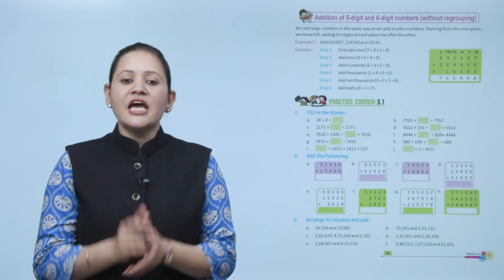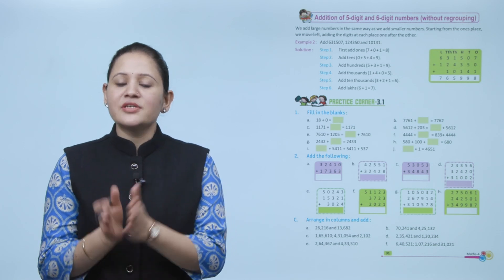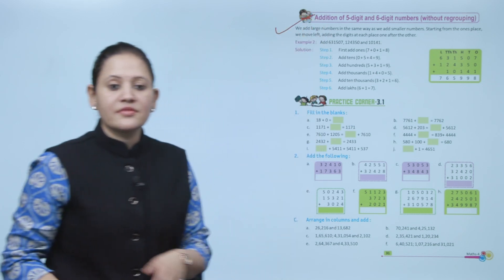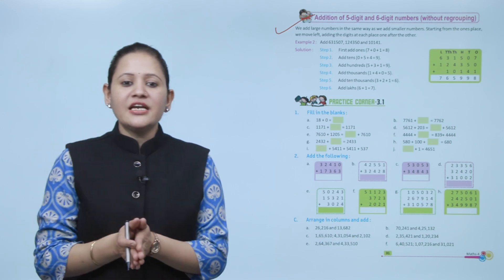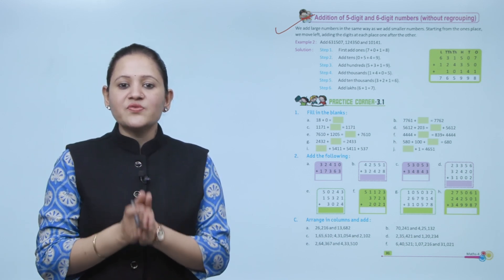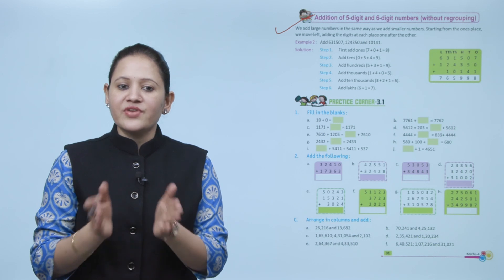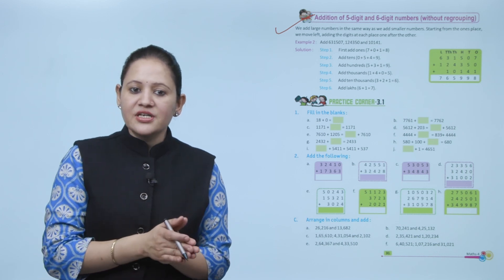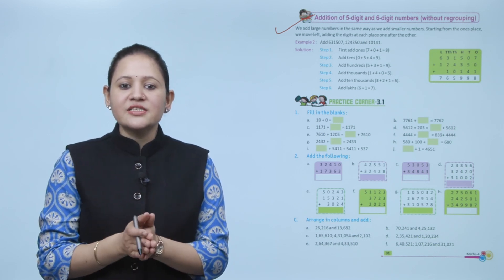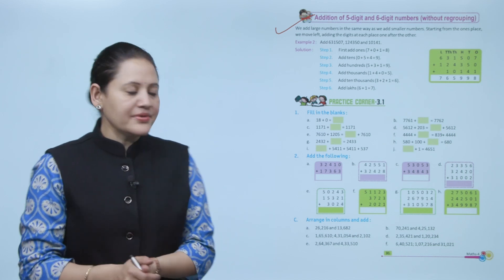Next is addition of five-digit and six-digit numbers without regrouping. We add large numbers in the same way as smaller numbers — starting from the ones place, we move left, adding the digit at each place one after the other.